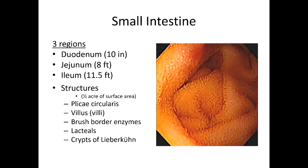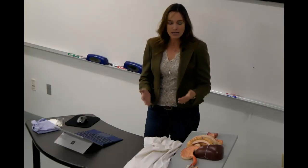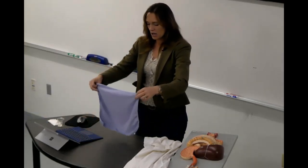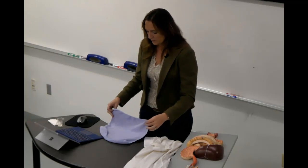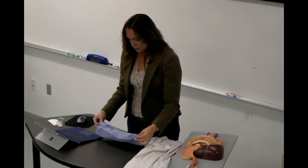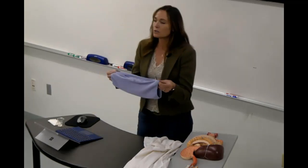Through all three sections there is an immense amount of surface area. Just by having folds it allows us to have more surface available to interface with the food so we can maximize absorption. These are called plicae circularis. I'll use this cloth as an example. If we have this cloth out, we roll it up and make it into a tube, you can see how long that would be.